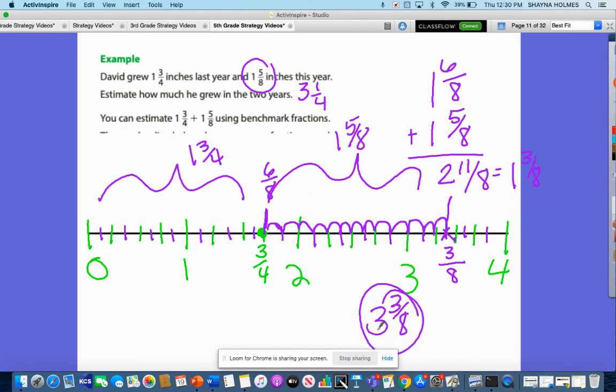So 3 and 3 eighths, 3 and 1 fourth, I would say that that's pretty close. So 3 and 4 eighths would be half. So it's just a little less than half. So I would say our estimate is pretty good. That is the end of today's math strategy video.